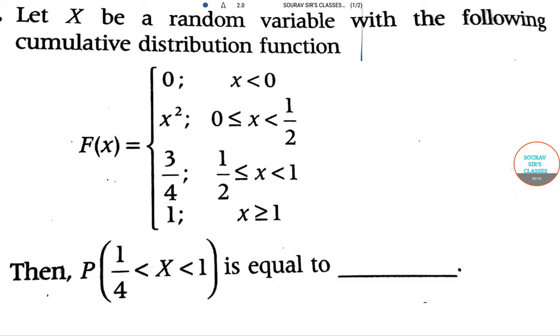Let X be a random variable with the following cumulative distribution function: F(x) equals 0 when x is less than 0, F(x) equals x squared when x is greater than or equal to 0 and less than 1/2, F(x) equals 3/4 when x is greater than or equal to 1/2 and less than 1, and F(x) equals 1 when x is greater than or equal to 1.